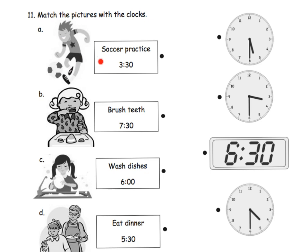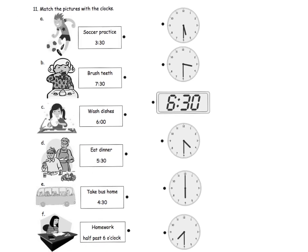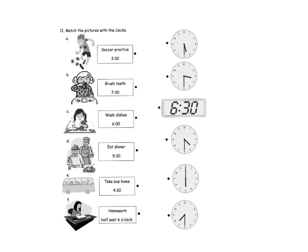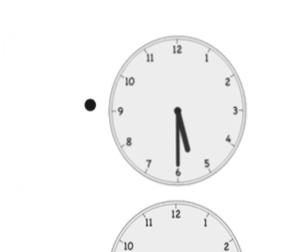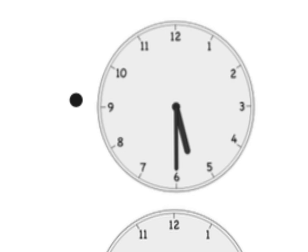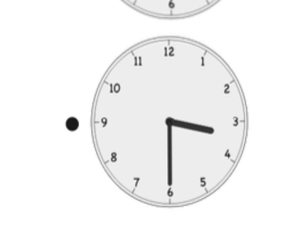And so we're going to match each picture with the proper clock. So it says, okay, soccer practice happens at 3:30. We need to figure out which one of these clocks says 3:30. Does this clock say 3:30? No. That clock says it's between 5 and 6. So it's 5:30. Does this clock say 3:30? Well, the minute hand is at the 6. So that's the 30. And sure enough, it's between the 3 and the 4. So this one is 3:30.